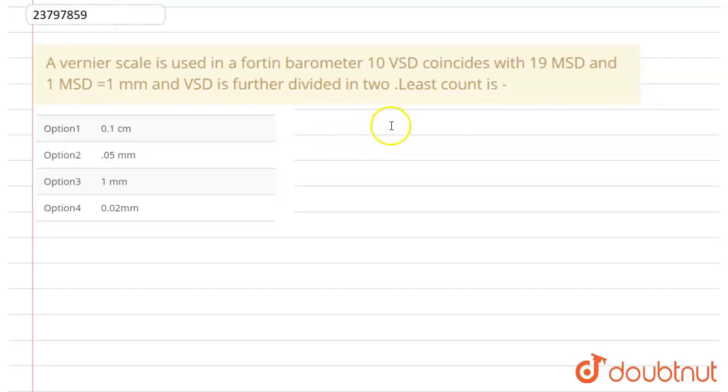Hello everyone, today we will see a question. In the question, a vernier scale is used in a fortin barometer. 10 VSD coincides with 19 MSD and 1 MSD is equal to 1 mm. And VSD is further divided into 2. The least count is?